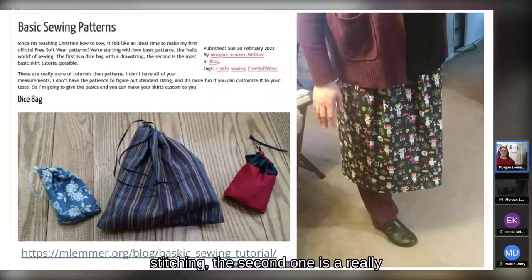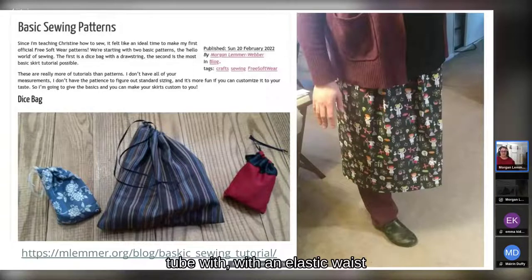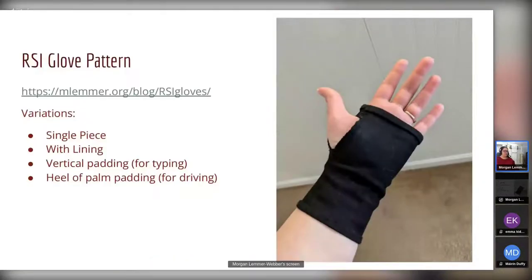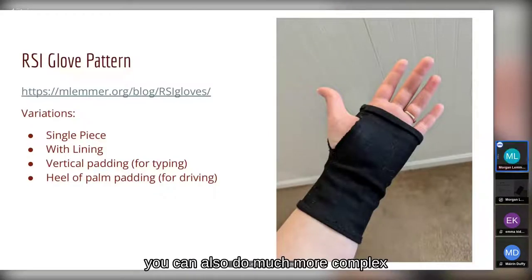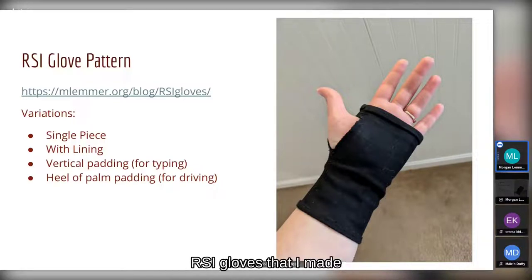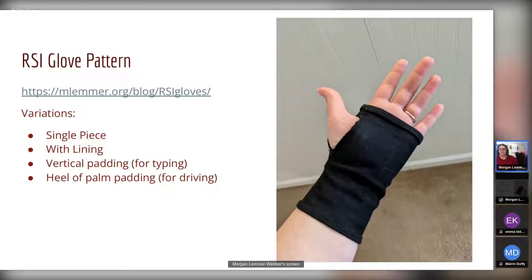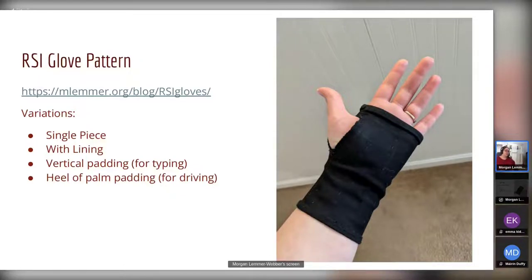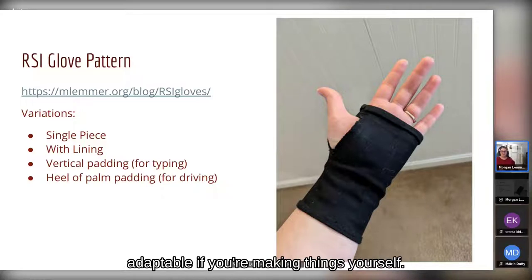The second pattern is a very basic skirt — basically just a tube with an elastic waist: a seam, a hem, another hem, and an elastic waistband. But you can also do much more complex patterns. This is a pattern for RSI gloves that I made — here is a completed pair in a different style, so you can be a lot more adaptable when making things.